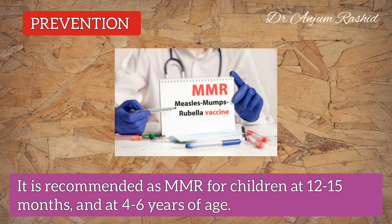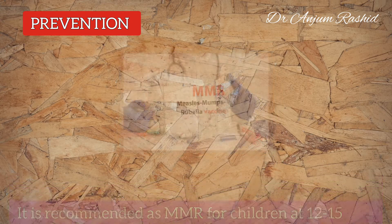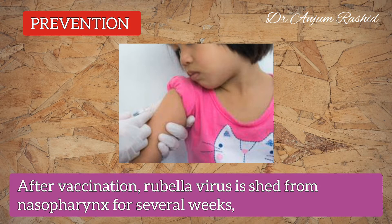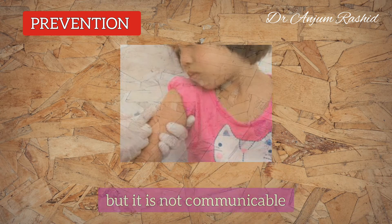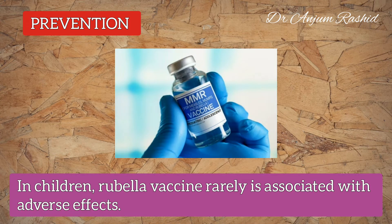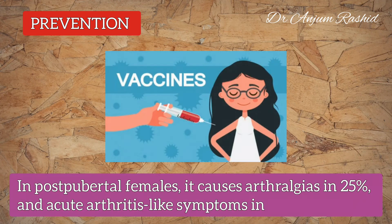The live rubella vaccine prevents infection. It is recommended as MMR for children at 12 to 15 months and at 4 to 6 years of age. After vaccination, rubella virus is shed from the nasopharynx for several weeks, but it is not communicable in children.